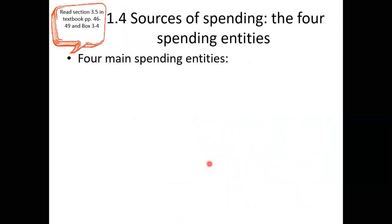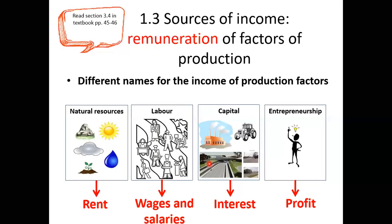There is a fifth factor of production — technology — but for technology we do not have a return. So we only consider these four factors and their returns: rent (for land), wages and salaries (for labor), interest (for capital), and profit (for entrepreneurship). We have five factors, but the remuneration or return only applies to these four.